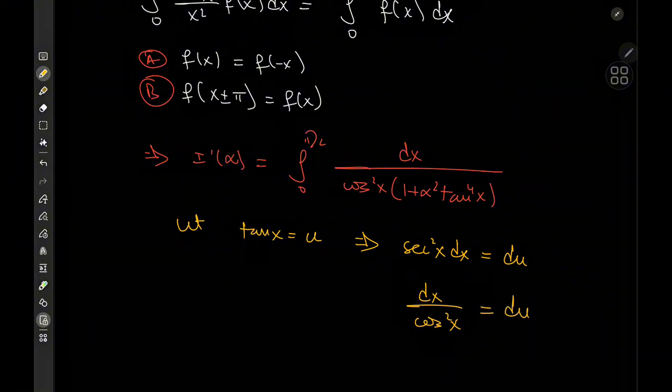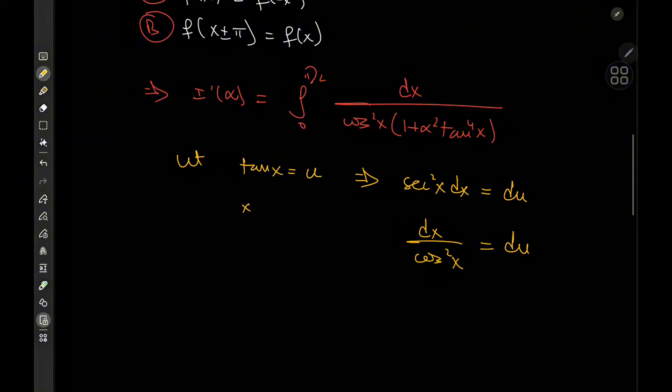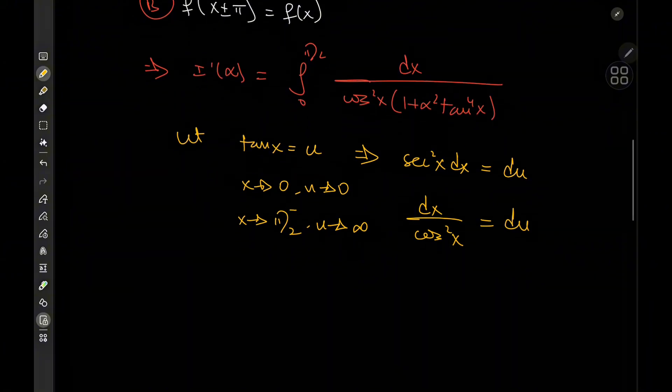So what if we let tangent x equal u, which would imply that secant squared x dx is equal to du. And of course, secant squared is just one over cosine squared. So those are the ingredients for our differential element, and we have them. And as x approaches zero, we have u approaching zero. And as x approaches pi over two, we have u approaching infinity, of course. Of course, x is supposed to approach pi over two from the left, which it is anyway.